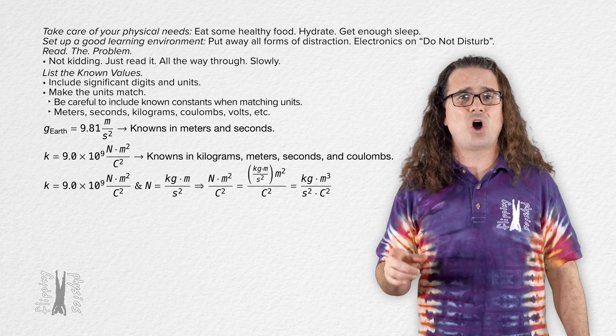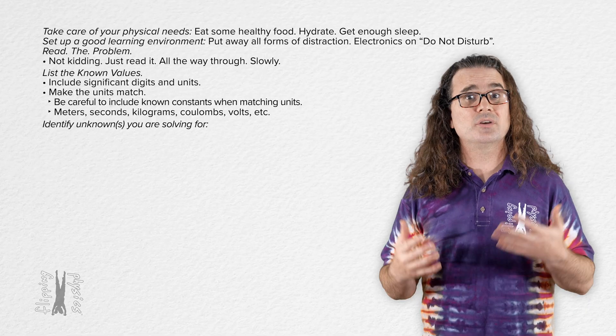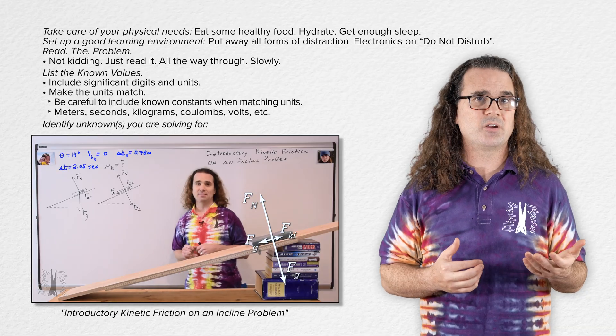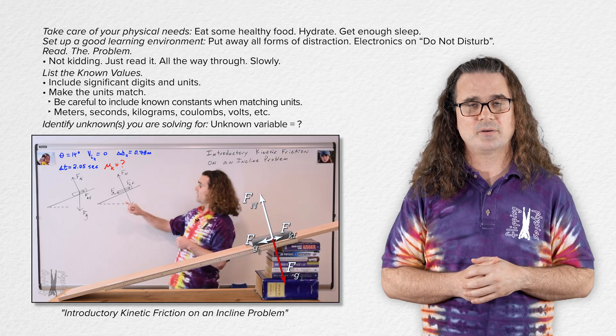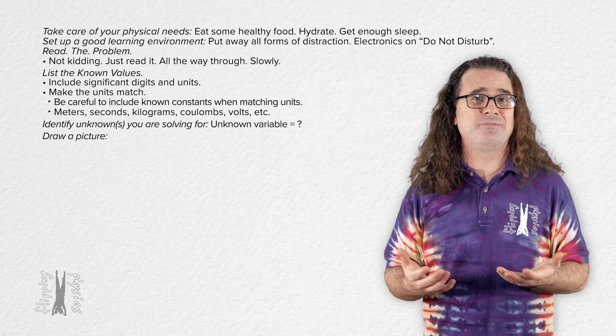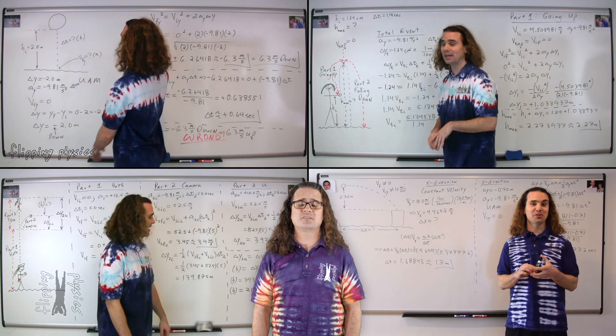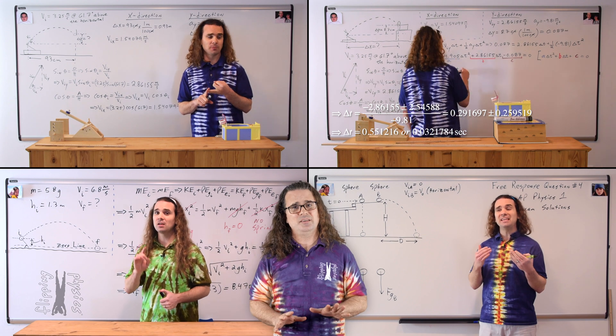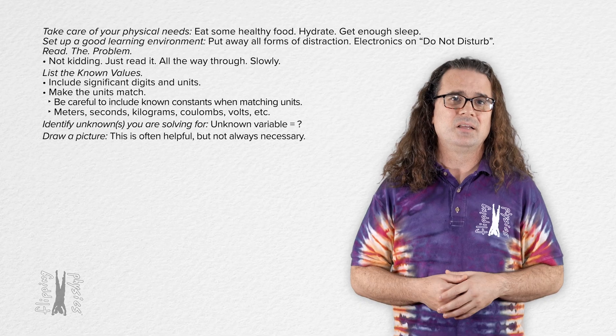Okay. After you have listed all of your known values and matched their units, identify which unknown or unknowns you are solving for. As you can see in this video, I usually do this by listing my known variables along with the unknown variable and setting the unknown variable equal to question mark. Next. Draw a picture. Drawing pictures of what is happening in physics problems can often be helpful. And you do not have to be a good artist, as I have demonstrated in many, many videos. Honestly, you do not always have to draw a picture. However, it can often be helpful.